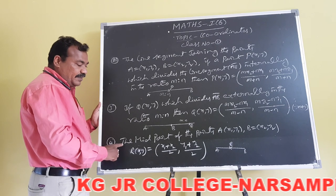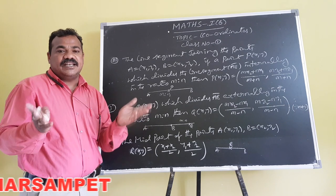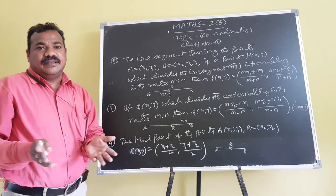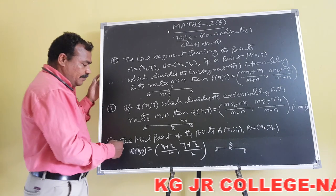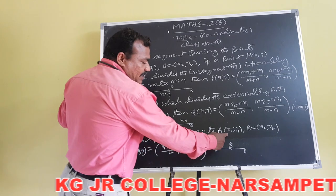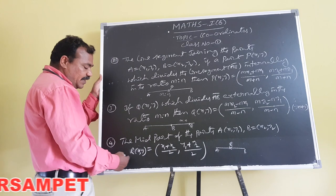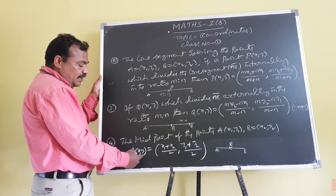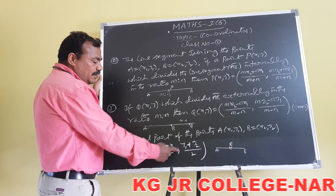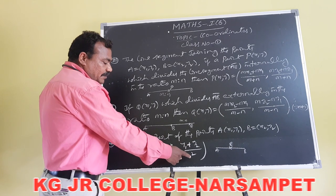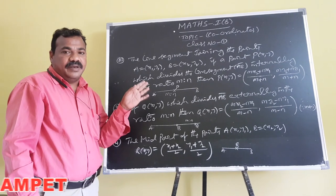The midpoint of a line segment is the point that divides it into two equal parts, so the ratio is 1:1. The midpoint of the line segment joining (x1, y1) and (x2, y2) has coordinates: M(x, y) = ((x1 + x2)/2, (y1 + y2)/2). These are some useful formulas in coordinate geometry.